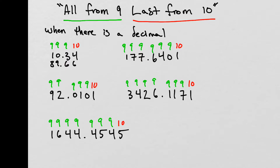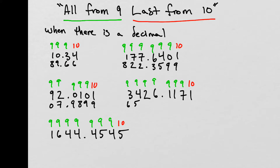Continuing decimal examples: 9 minus 1 is 8, 9 minus 7 is 2, 9 minus 7 is 2. Bring that decimal down, then 9 minus 6 is 3, 9 minus 4 is 5, 9 minus 0 is 9, and 10 minus 1 is 9. Next number: 9 minus 9 is 0, 9 minus 2 is 7. Bring that decimal down. Then 9 minus 0 is 9, 9 minus 1 is 8, 9 minus 0 is 9, and 10 minus 1 is 9.